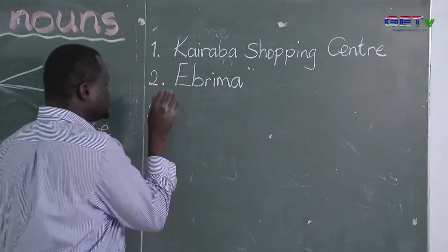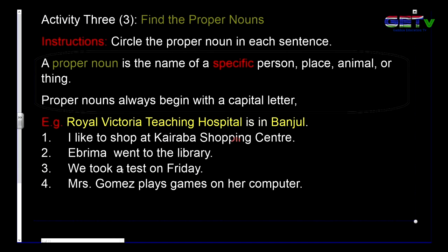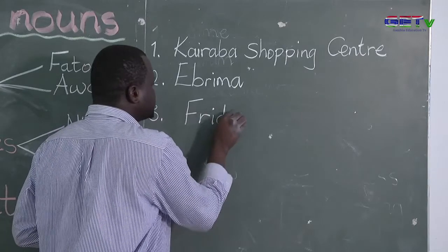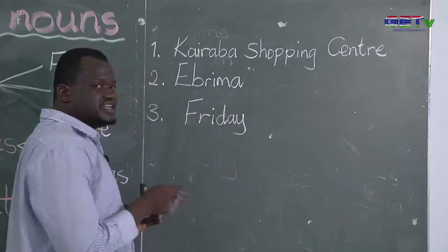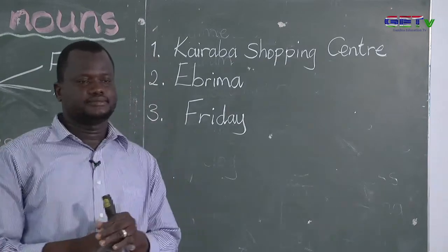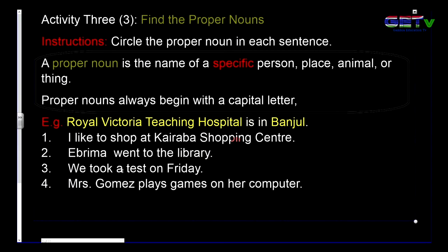Number three: 'We took a test on Friday.' Friday is the name of a particular day, so the proper noun in the sentence is Friday. And now the last question in this activity: 'Mrs. Gomez plays games on her computer.' Obviously, Mrs. Gomez is the name of a particular person, so Mrs. Gomez is the proper noun in this sentence.